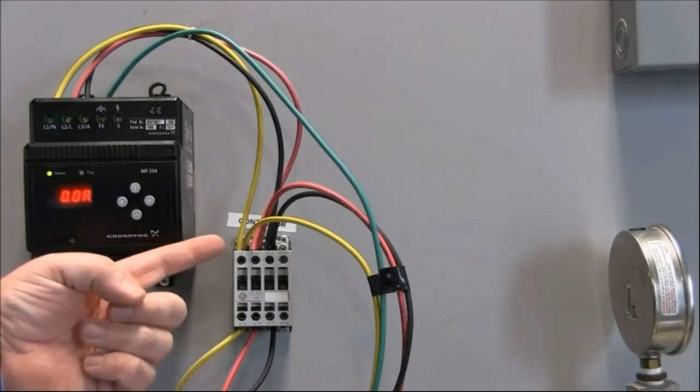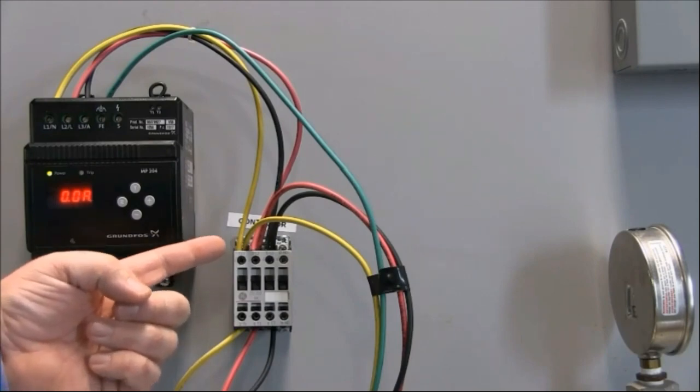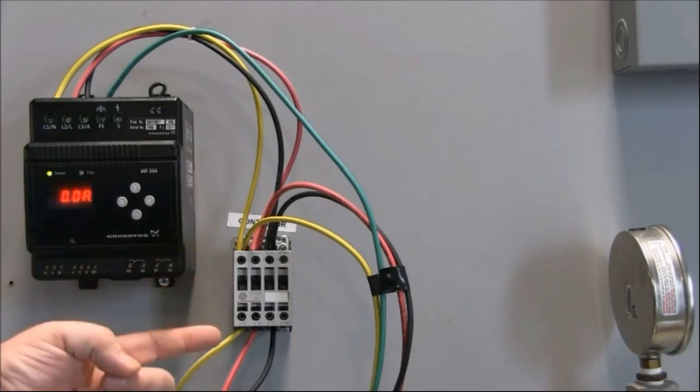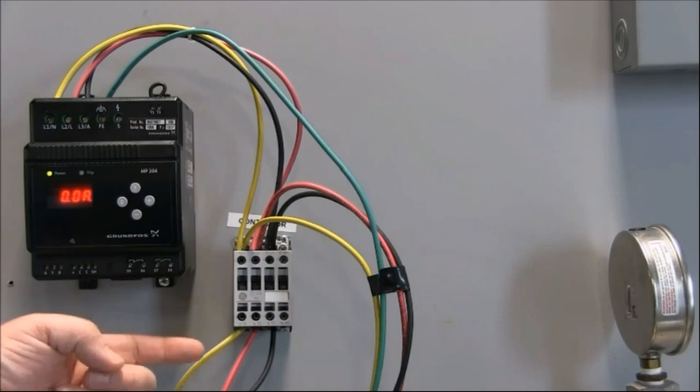On the top side here, this is our line side or our utility source side. On the bottom end of the contactor here, this represents our load side or pump side.